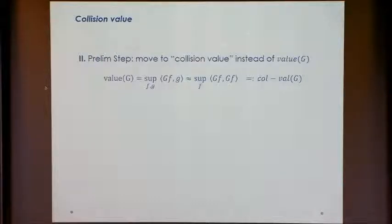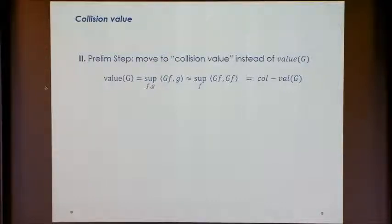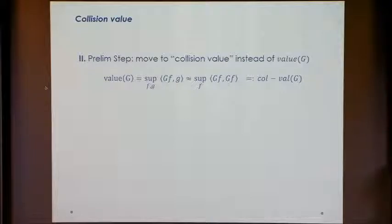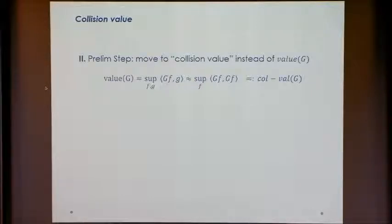In the classical setting, the first step is to move from the collision value to Val+. The value was described by a bilinear form where F and G were vectors of scalars. Moving to the collision value means restricting Alice to use the strategy GF — we ignore Alice's independent strategy and Bob's strategy determines what Alice plays. It turns out this doesn't lose much: this symmetric supremum is almost the same as the original. This is the collision value — it's nice, symmetric, like a square, and easy to work with.